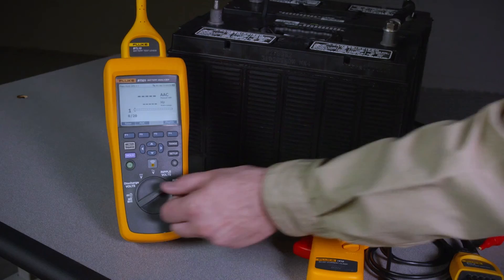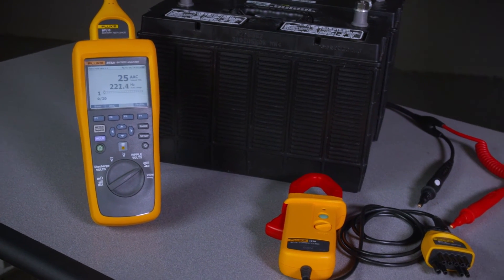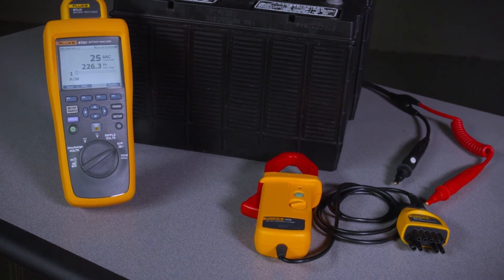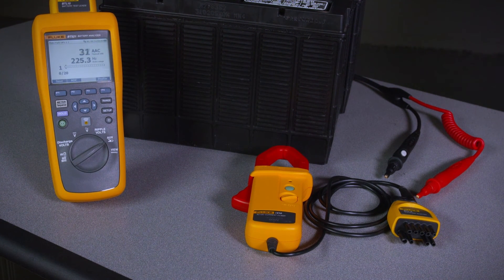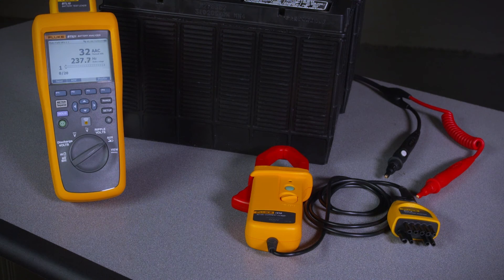The next position on the dial is auxiliary mode. In auxiliary, you can measure voltage or you can measure the output of a current sensor. So you can measure charging current or discharge current.